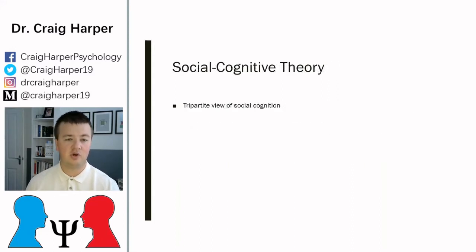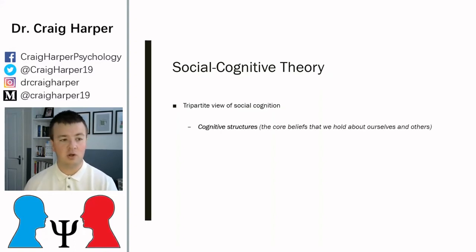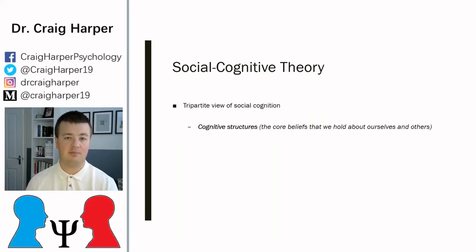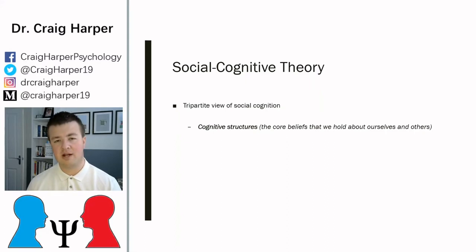Social cognitive theory is a tripartite model, meaning it assumes social cognition is based on three key constructs. The first is cognitive structures — our core beliefs, implicit theories, or implicit attitudes that we hold about ourselves and other people. These reflect how we think about ourselves and others from a non-conscious, automatic perspective.